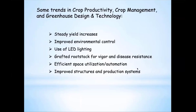We have improved environmental control. Our knowledge of how to control the environment is probably better now. We see increased use of LED lights — we've used high-pressure sodiums on greenhouse tomatoes for a number of years, but LEDs give us some exciting new possibilities, especially in low-light climates. The use of grafted rootstock, for disease resistance and increased vigor, has greatly increased yield capacity. And then we see some improvements in structures and production systems and early-stage technologies for better space utilization.